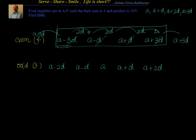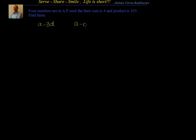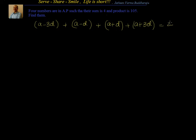Let's solve the problem: 4 numbers in AP with sum 4 and product 105. Let the numbers be a minus 3d, a minus d, a plus d, and a plus 3d. Adding them, the d terms cancel and we get 4a equal to 4, giving us a equal to 1.